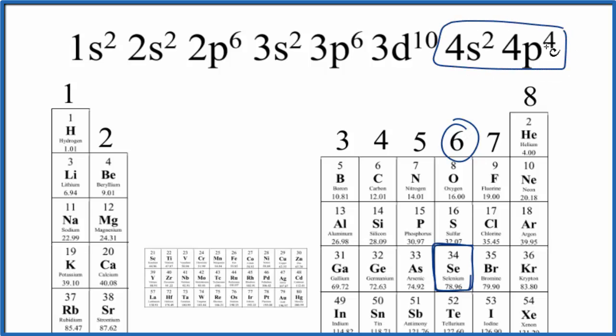So we have 2 plus 4, we have 6 total valence electrons, just like we saw when we looked at the group to find the number of valence electrons for selenium.